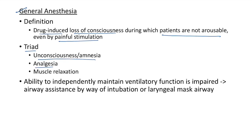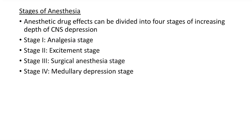Now let us see the triad of general anesthesia: unconsciousness or amnesia, analgesia, and muscle relaxation. These three are known as the triad of general anesthesia. During general anesthesia, the ability to independently maintain ventilatory function is impaired, so we have to provide airway assistance by way of intubation or laryngeal mask airway.